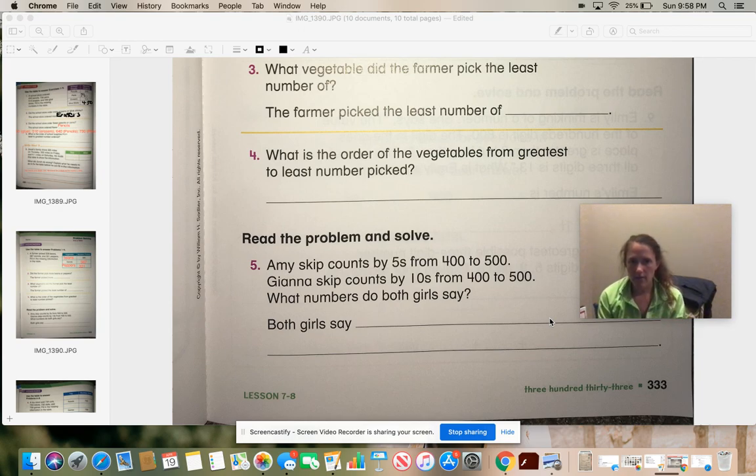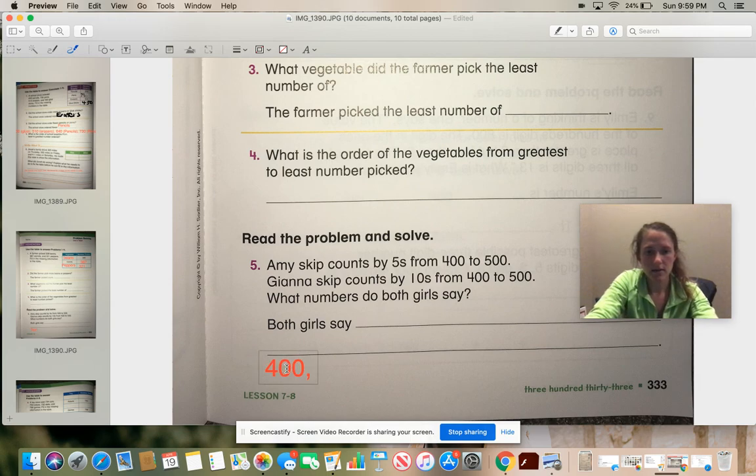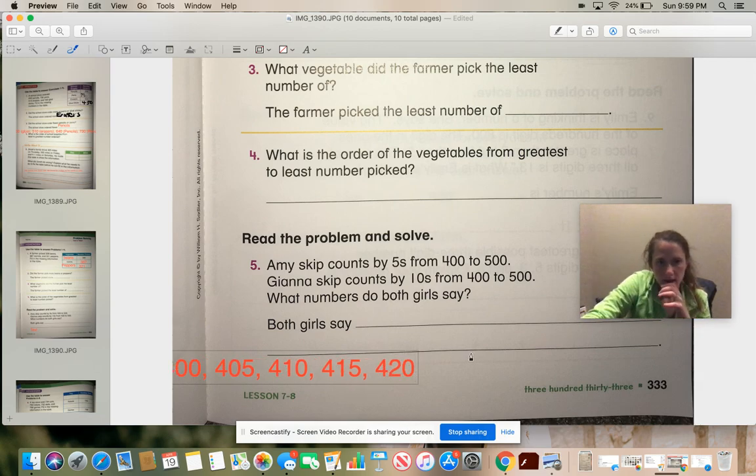So 400, 405, 410, 415, 420, 425, 430. So Amy's going to say all the numbers that have fives in them at the end in the ones place. Gianna, though, is not going to say any of those numbers that have the five in the ones place because she's just counting by tens. They're just going up in the tens place. So if you think about it, let me write something down to help us out. If Amy says 400 and then 405 and then 410 and then 415 and then 420, so that's what Amy's going to say.